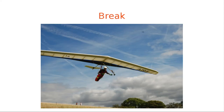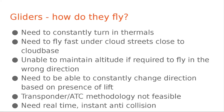We've done a lot of speaking about what people in light aircraft and airlines want. Now we need to look at stuff closer to home: how gliders fly and why the whole ATC organised-patterns approach is not suitable. When we're gliding we need to constantly turn in thermals; sailplanes will fly fast under cloud streets close to cloud base; we can't maintain altitude if required to fly in the wrong direction; we need to change direction the minute we see lift. For all these reasons, transponder-ATC methodology where you get told what to do is not feasible — we need real-time instant anti-collision.